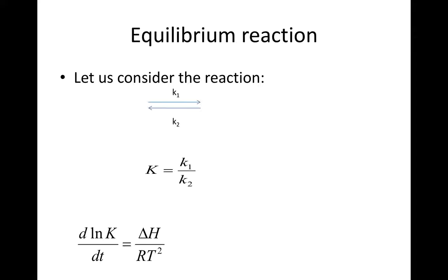Let us now look at the equilibrium reaction. Let us consider the reaction A plus B giving you C plus D at equilibrium with rate constant for forward reactions K1 and for inverse K2. Here of course capital K which is the equilibrium constant is K1 over K2.